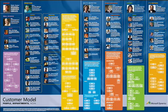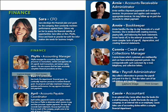First, let's take a look at the customer model. This basically shows you all the different people and positions in organizations that can use Dynamics GP. These are the user interfaces, or UIs — they set the roles and the internal controls that each desktop will be customized to. For example, in the finance department, you might find Sarah, the CFO, or Connie, the credit and collections manager.